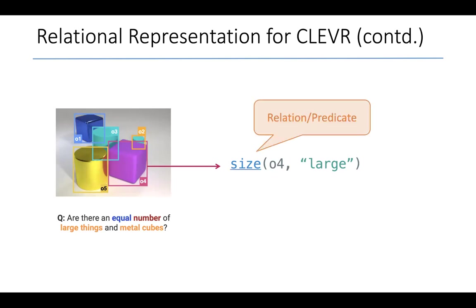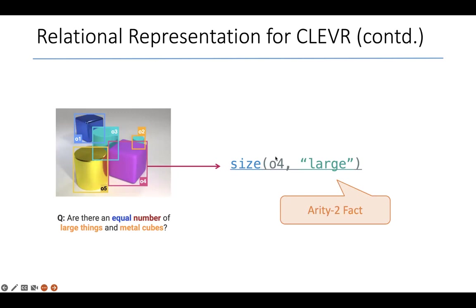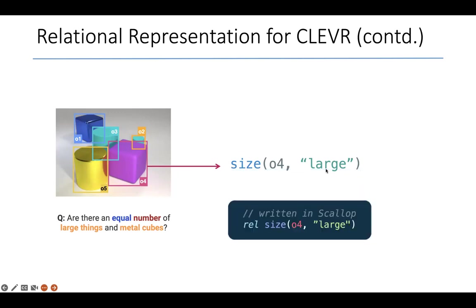For example, this tuple here says that we have a binary relation called size. What does it do? It denotes which objects have what size. For example, we might say the object O4 here has a large size. The way we write this in Scallop is simply using this rel keyword.